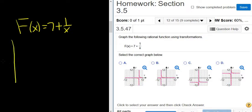1 over x has vertical and horizontal asymptotes along the coordinate axes. So it has a horizontal asymptote here, y equals 0, and it has x equals 0 as its vertical asymptote. And it looks like this.